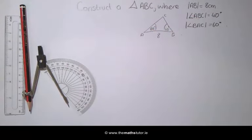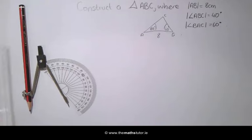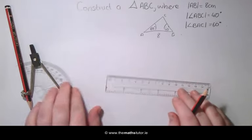We will start the construction by drawing our horizontal line AB which is 8 cm.